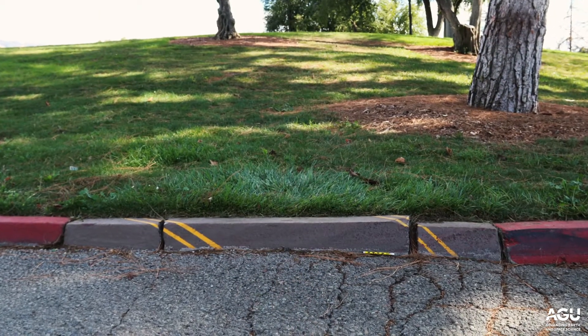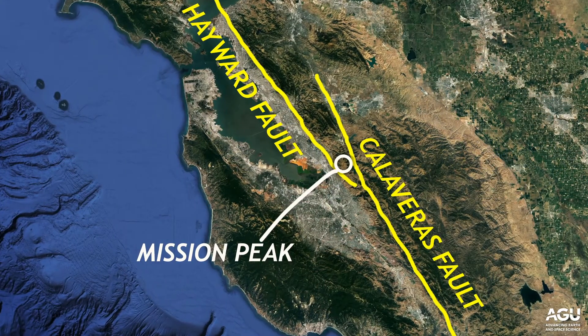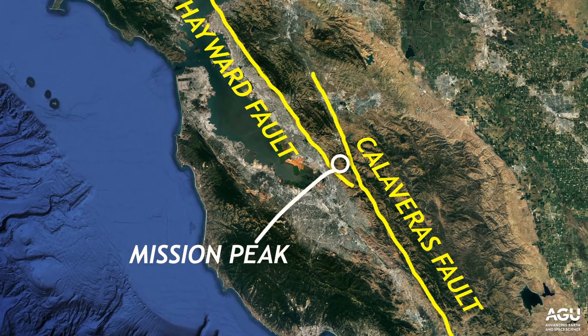I'm now standing outside the boathouse on Lake Elizabeth, and behind me are the East Bay Hills. The biggest peak over there is Mission Peak, which is a large example of a pressure ridge — the same thing we were just looking at on a small scale in the parking lot, now at mountain scale. Mission Peak exists because it's caught in a little zone of transpression between the southern end of the Hayward Fault and the northern end of the Calaveras Fault on the other side of the mountain. That's basically a left step in this overall right-lateral strike-slip fault system, and Mission Peak is caught in that squeezing zone, so the rocks there are basically popping up into the air.